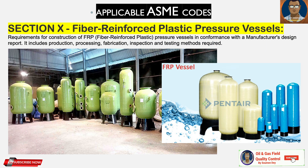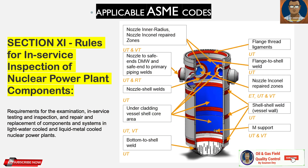Section 10 covers fiber reinforced plastic pressure vessels — requirements for construction of FRP (fiber reinforced plastic) pressure vessels in conformance with a manufacturer design report. It includes production, processing, fabrication, inspection, and testing methods. Section 11 covers rules for in-service inspection of nuclear power plant components — requirements for examination, in-service testing, inspection, and repair or replacement of components and systems in light water cooled and liquid metal cooled nuclear power plants.